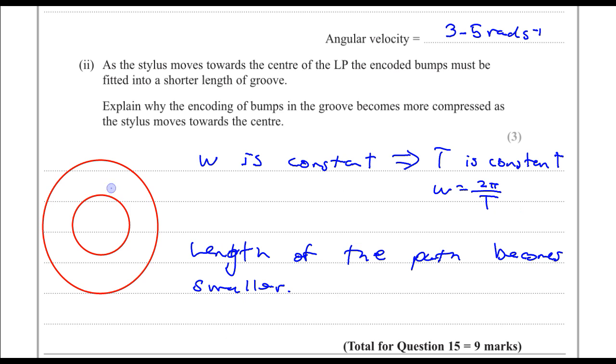The same amount of bumps need to be encoded. Then, in order to fit the same amount of bumps into a shorter path, they need to become more compressed.